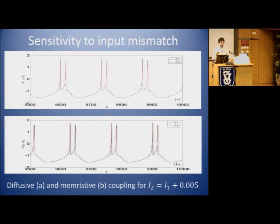Also, sensitivity to input mismatch. Again, you don't change anything else, just you apply a small delta to the input current to one of the two neurons. As you can see, the resistive coupling has no effect—basically synchronization is still there—but memristive coupling is highly sensitive and you lose synchronization.